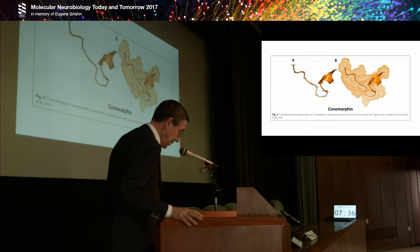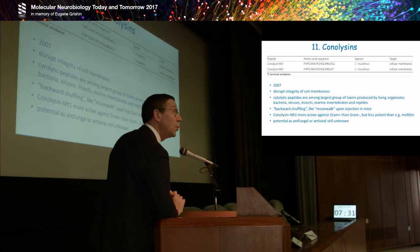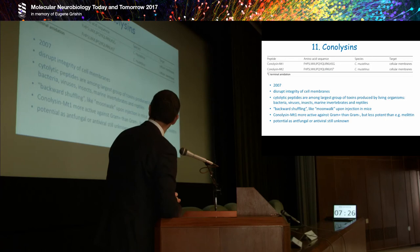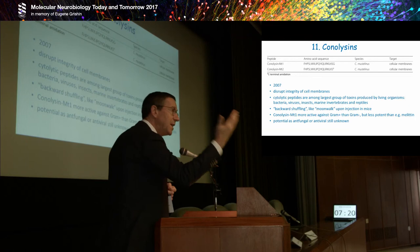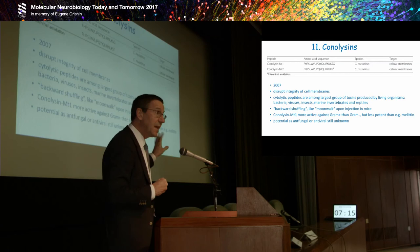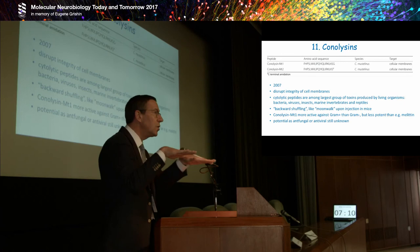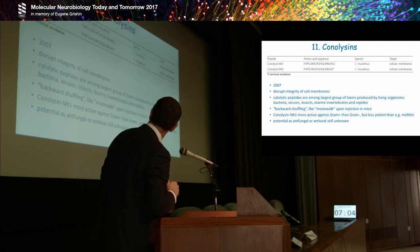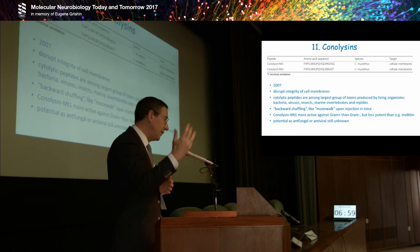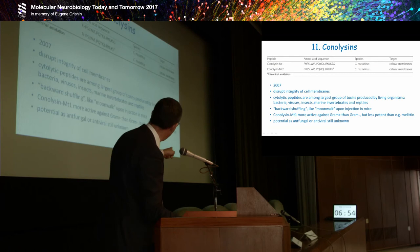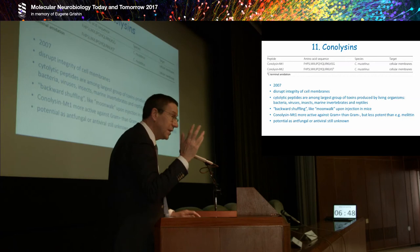Then the conolysins, two representatives. We know them since 2007. They disrupt integrity of cell membranes, so they are cytolytic peptides. Cytolytic peptides, many of you in the audience will recognize, we can find in bacteria, viruses, insects, marine invertebrates, reptiles. When you inject them in vertebrates, like in rodents, mice, they do a very strange backward shuffling mode, a kind of moonwalk behavior. The conolysins MT1 that you see is more active against gram-positive than gram-negative bacteria, but not a very nice lead compound in terms of potency when you compare it with melittin that can be found in bee venom. There is still potential for antifungal or antiviral, but still a lot of work has to be done.